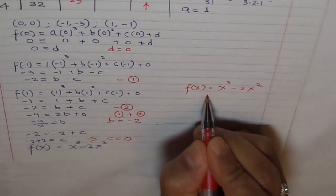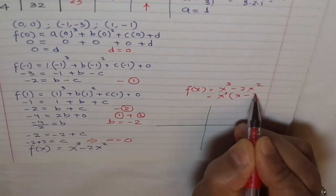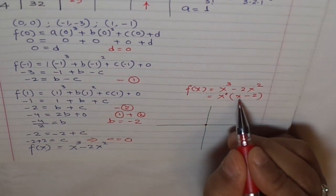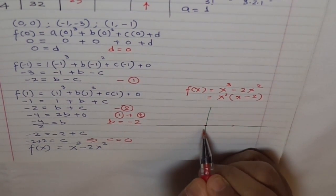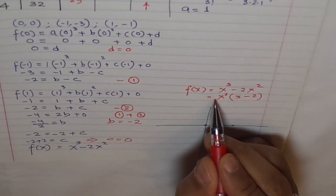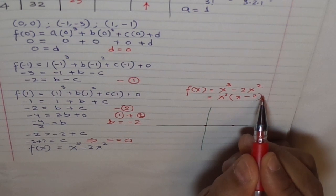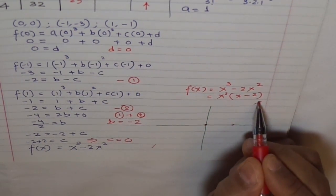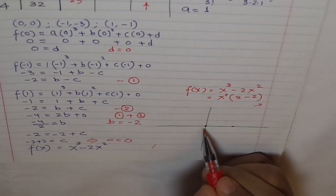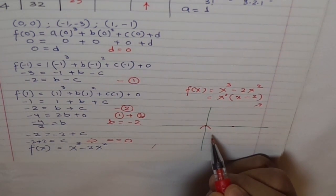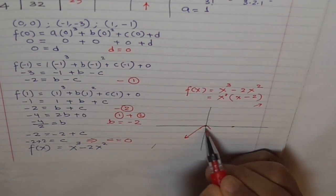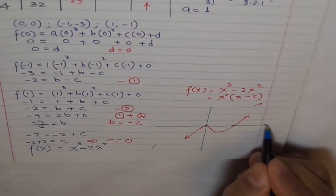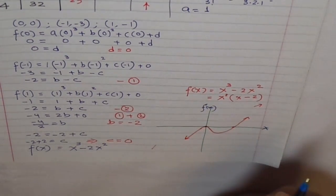That's the final answer. Now let's sketch this graph. The function is F(x) equals x³ minus 2x². To sketch the graph it is good to factor it: x² is common, so we get x²(x minus 2). The zeros are at x equals 0 and x equals 2. Checking end behavior: leading coefficient is positive and degree is 3, so the graph goes in opposite directions — from bottom-left to top-right. At x equals 0 there is a degree-2 zero so the graph touches and turns there.